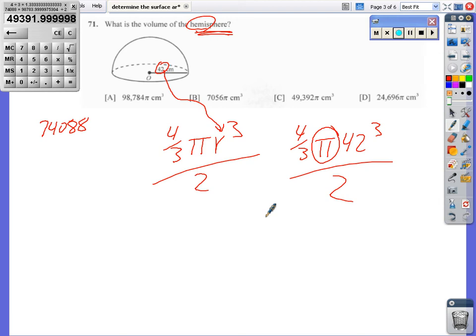So 49392 pi units. In this case, it's centimeters cubed. There it is. Of course, they left that other answer in there, because they want you to, well, they don't want you to, but that's a common mistake, to not divide it by 2. Okay, we're getting there.